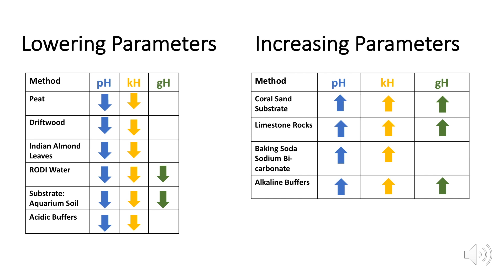You can also use chemicals like powdered acidic buffers to decrease your pH and KH. To naturally increase your parameters, adding limestone rocks like Seiryu stones and Texas holey rock, or substrates like coral chips and coral sand will increase your pH, KH and also GH. Chemicals such as baking soda or specialised buffers will also increase these parameters to better suit fish that prefer alkaline waters.